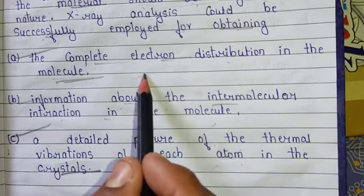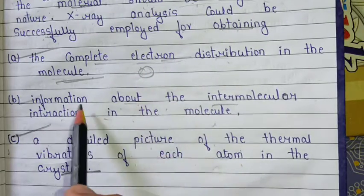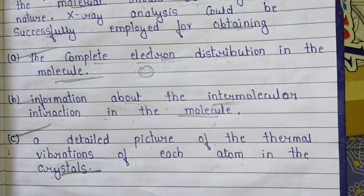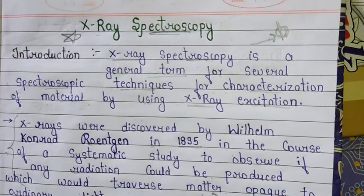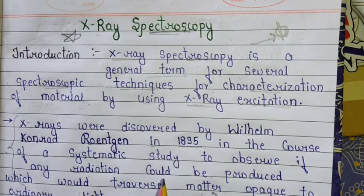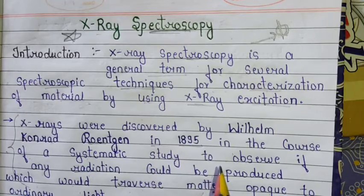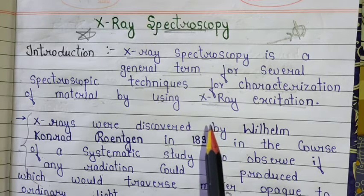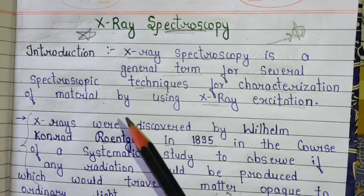We get to know the electron distribution in the molecules we study, information about intermolecular interactions of the molecule, and a detailed picture of the thermal vibration of each atom in the crystals. This is the complete basic introduction to X-ray spectroscopy. In my upcoming videos, we will discuss all topics related to X-ray spectroscopy. I also provide handmade notes which are very important for your exam preparations. I hope this lecture is helpful — please like, share, and subscribe to my channel. Thank you so much for watching.